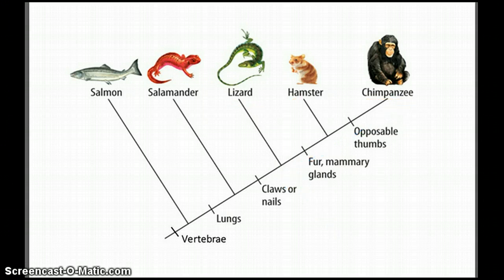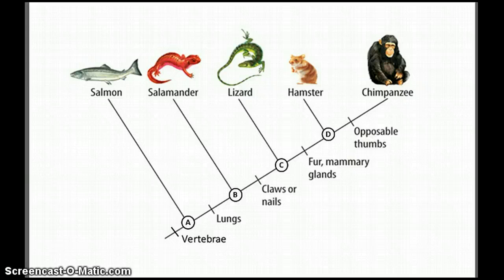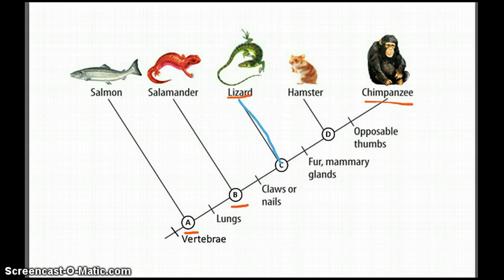Long ago there lived an organism who gave rise to lizards, hamsters, and chimpanzees. You will often see these common ancestors labeled and have questions like, Who is the common ancestor of lizards and chimpanzees? And by following the lines, you can confidently answer, C.